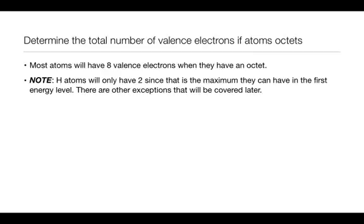All other atoms, when they have a full shell, they will have eight valence electrons to make that octet. There are other exceptions that will be covered later.